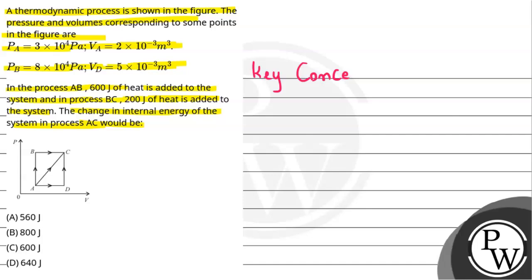Before that, let's talk about the key concepts we're going to use for this question. First of all, for an isochoric process, the change in volume will be zero. If the volume is constant, the amount of work done will be zero.